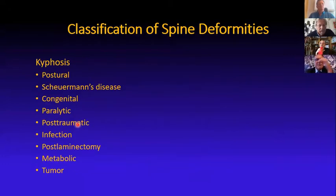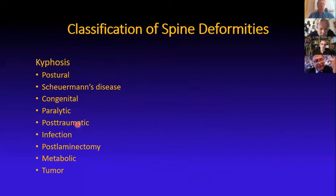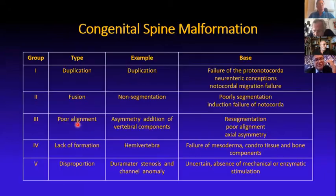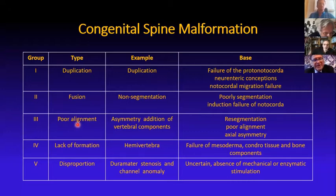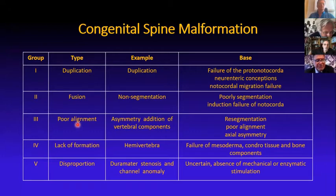As you all know, there are many reasons for having a kyphotic curve, and many of them come to neurosurgeons or orthopedic surgeons for treatment. Some of them are associated with malformation. Congenital malformation will play a role in this association with neurological deficit. We have many kinds of deformity in the spine: duplication, fusion, poor alignment, lack of formation, and disproportion.